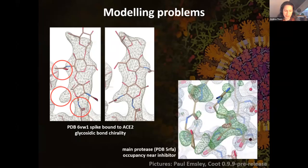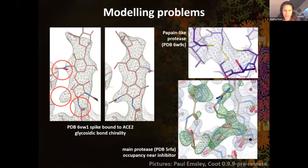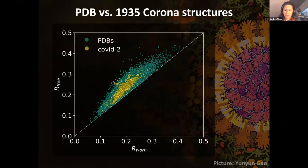Here's another example from COVID Moonshot: occupancy near the inhibitor is not one, and there's likely an alternative conformation, but it is not reflected in the structure. Or here in the Papain-like protease zinc finger domain, where there has been a mismodel - a disulfide bond where there should be a zinc. So metals are particularly prone to modeling errors.